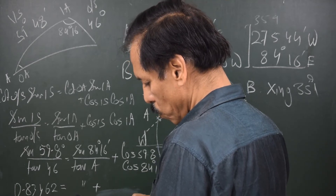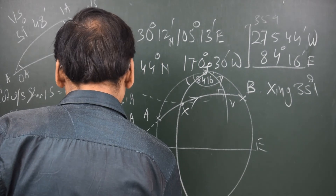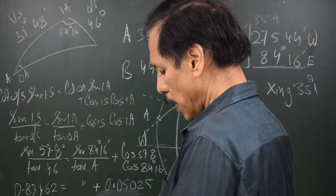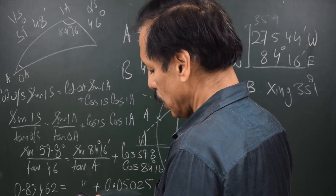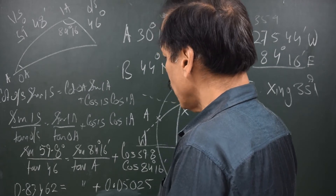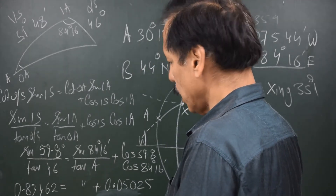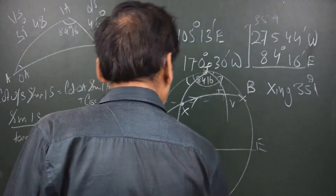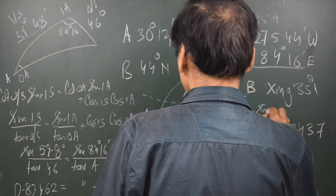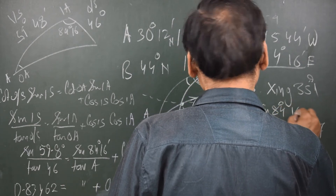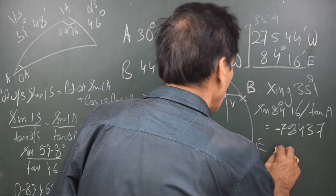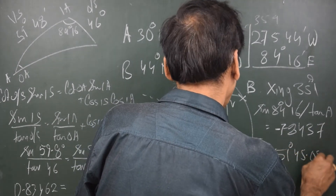Cosine 59.8 degrees times cosine 84 degrees 16 minutes equals 0.05025. Taking this to the left hand side gives 0.78437. So 0.78437 equals sine 84 degrees 16 minutes divided by tan A. Therefore tan A equals sine 84 degrees 16 minutes divided by 0.78437. This gives the value of A as 51 degrees 45.05 minutes — that is the initial course.